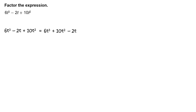Rewrite as 6t cubed plus 10t squared minus 2t. From each term, factor out 2t. You will get 2t times the quantity 3t squared plus 5t minus 1.